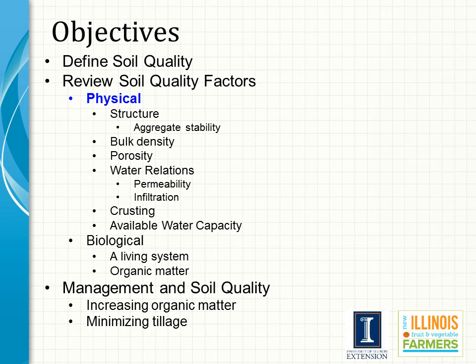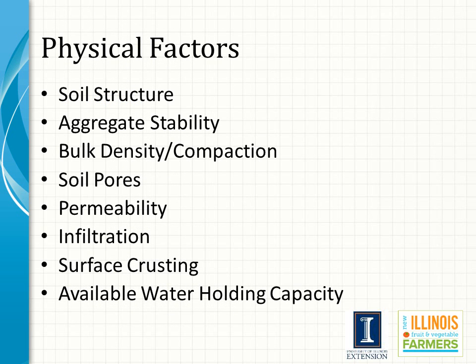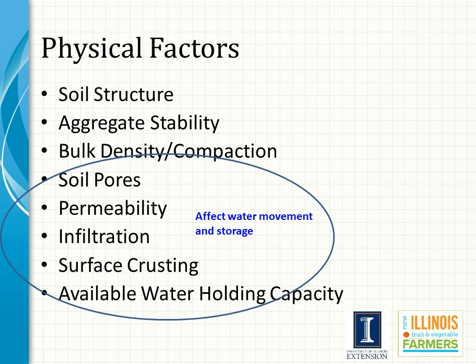We're going to begin the discussion about soil quality by looking at some of the physical properties that influence soil quality. These include soil structure and its relationship to soil porosity, aggregate stability, the bulk density that impacts compaction, and how those things impact water movement and storage within the soil — such as permeability and infiltration, soil crusting, and available water holding capacity.